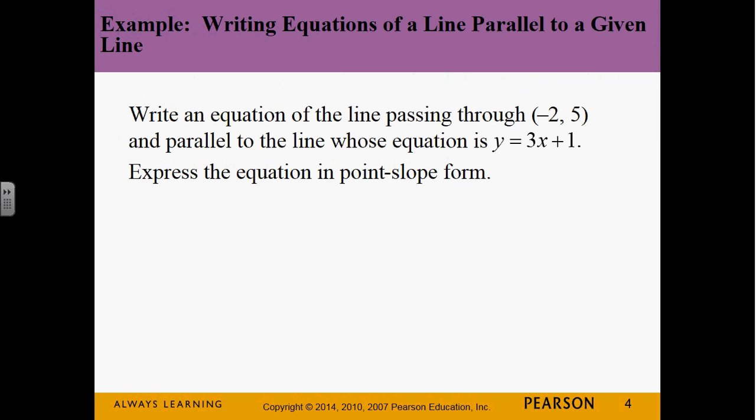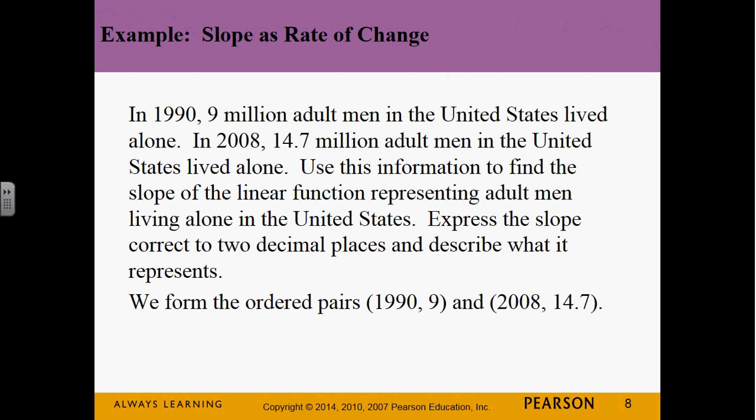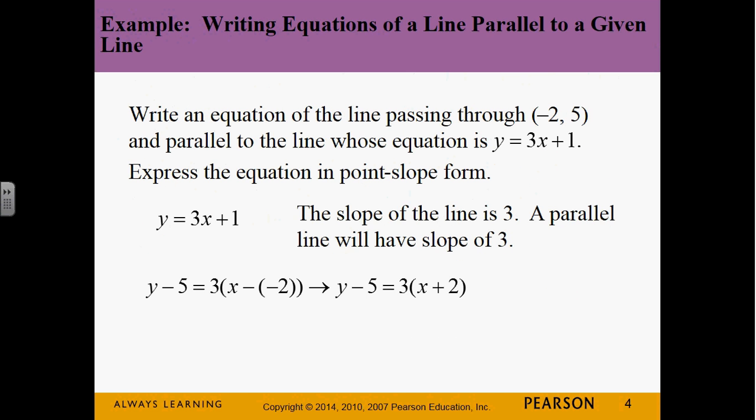So now, what if we want to write an equation of a line passing through a point that's parallel to another line? If I say I need an equation that's parallel to y = 3x plus 1, what's the slope going to have to be for the line that I'm creating? Be careful. Not 3x, just 3. The x is not part of the slope, it's just the variable. But it is 3, right? m is 3. So I know I'm going to have a slope of 3, and it's going to pass through the point (-2, 5).